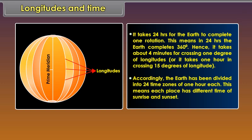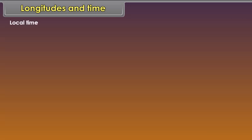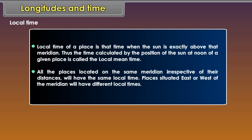This means each place has a different time of sunrise and sunset. The earth moves from west to east, which is why the time will be ahead of Greenwich in the east and behind Greenwich in the west. Local time: The local time of a place is that time when the sun is exactly above that meridian. Thus, the time calculated by the position of the sun at noon of a given place is called the local mean time. All the places located on the same meridian, irrespective of their distances, will have the same local time. Places situated east or west of the meridian will have different local times.